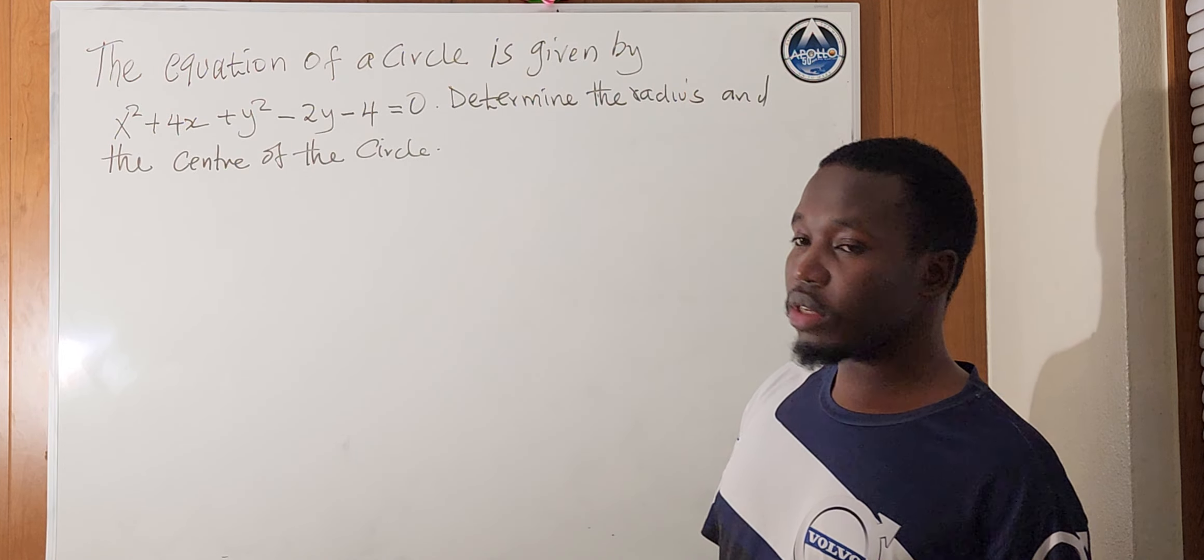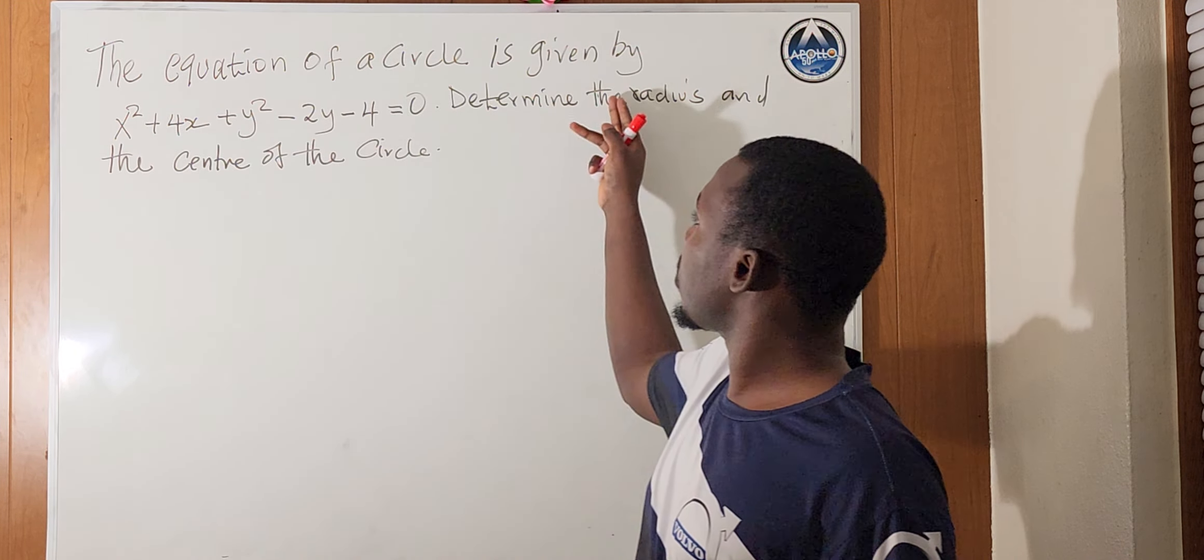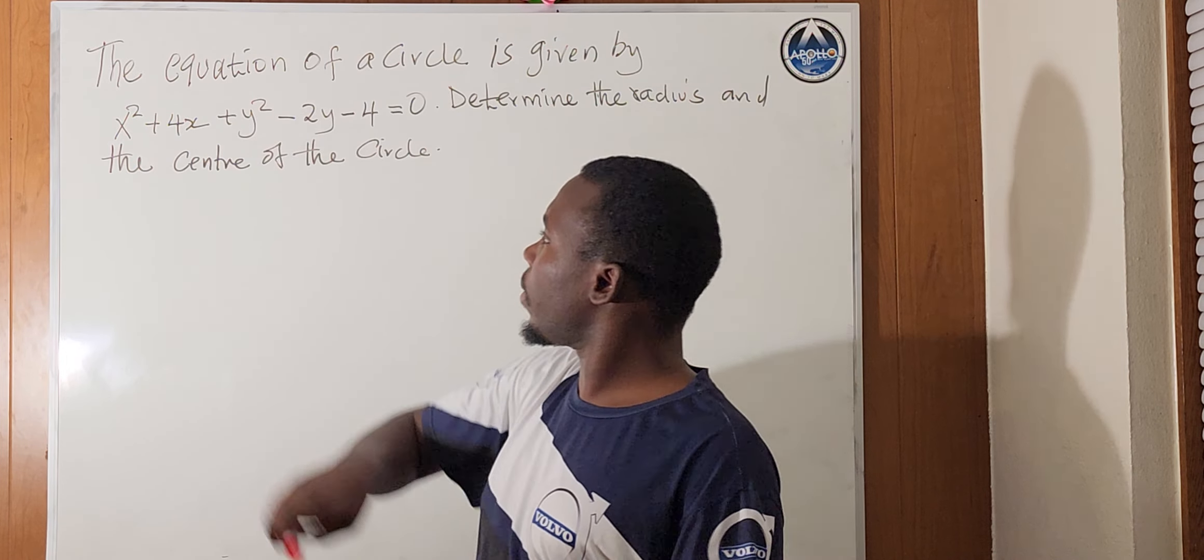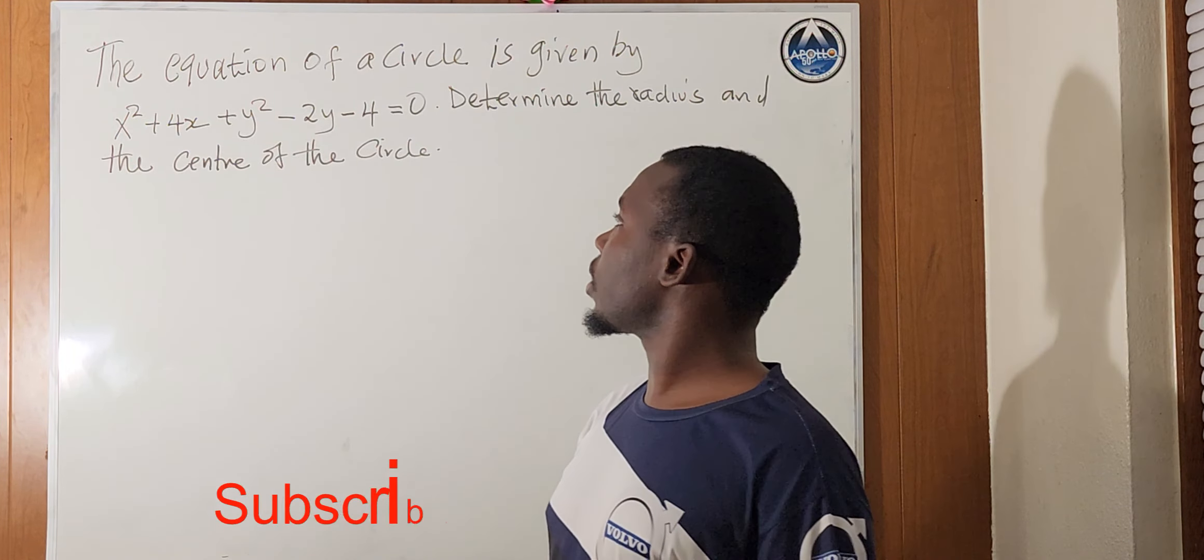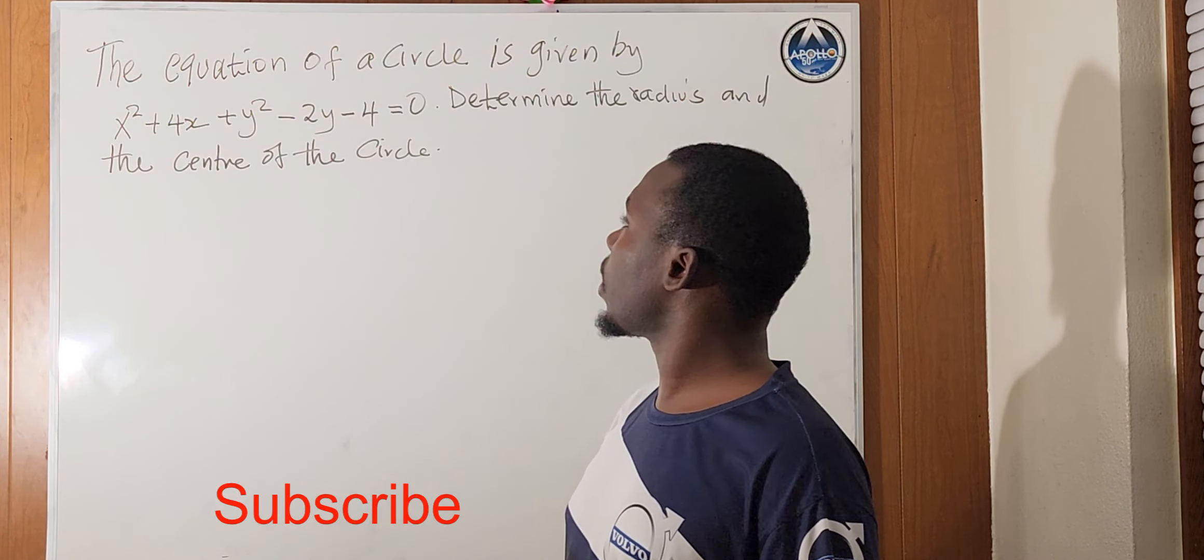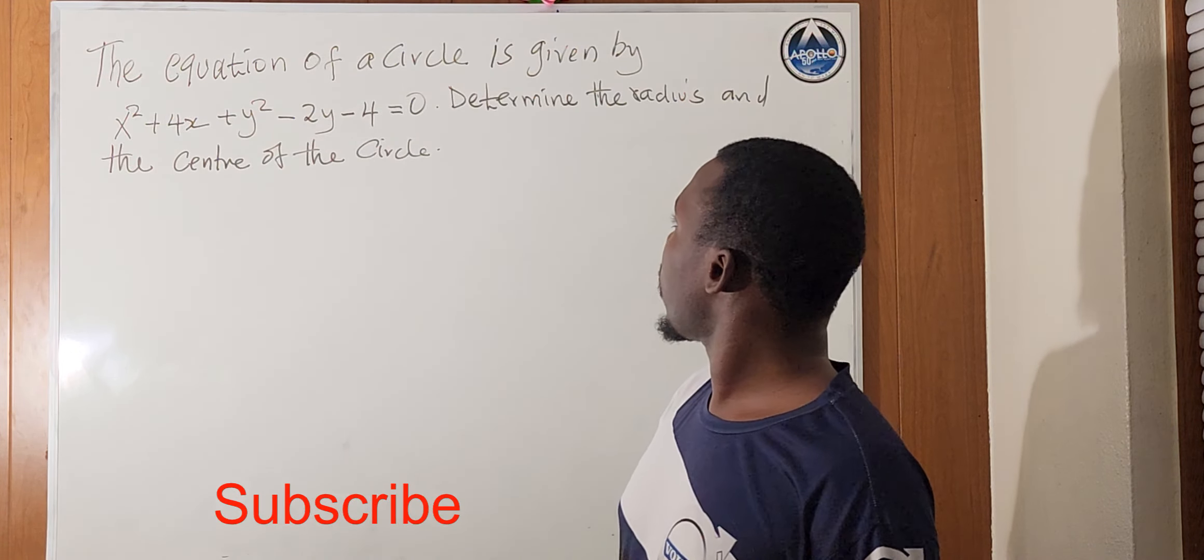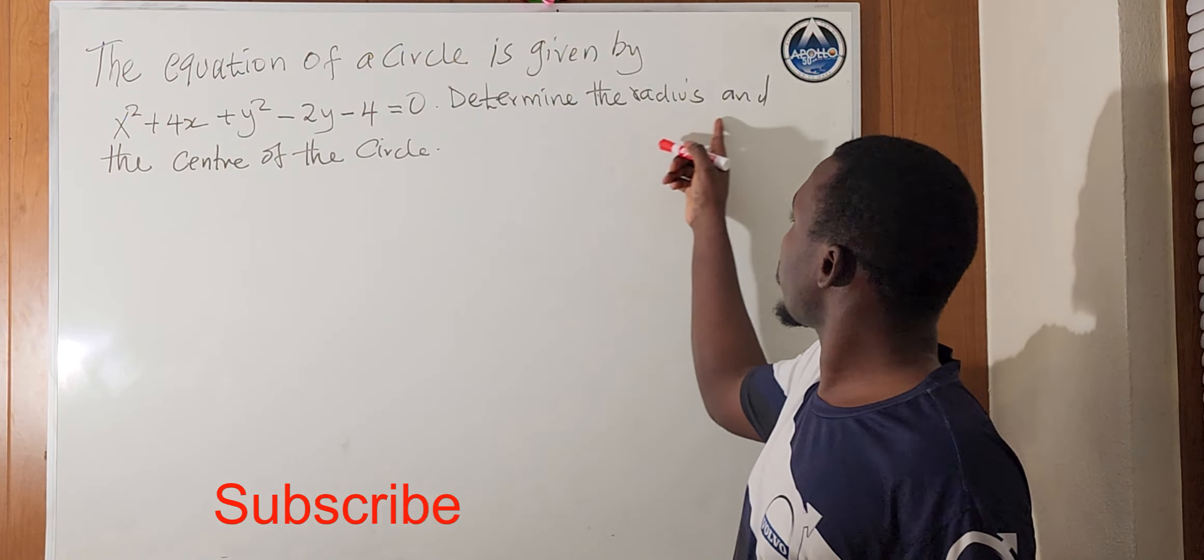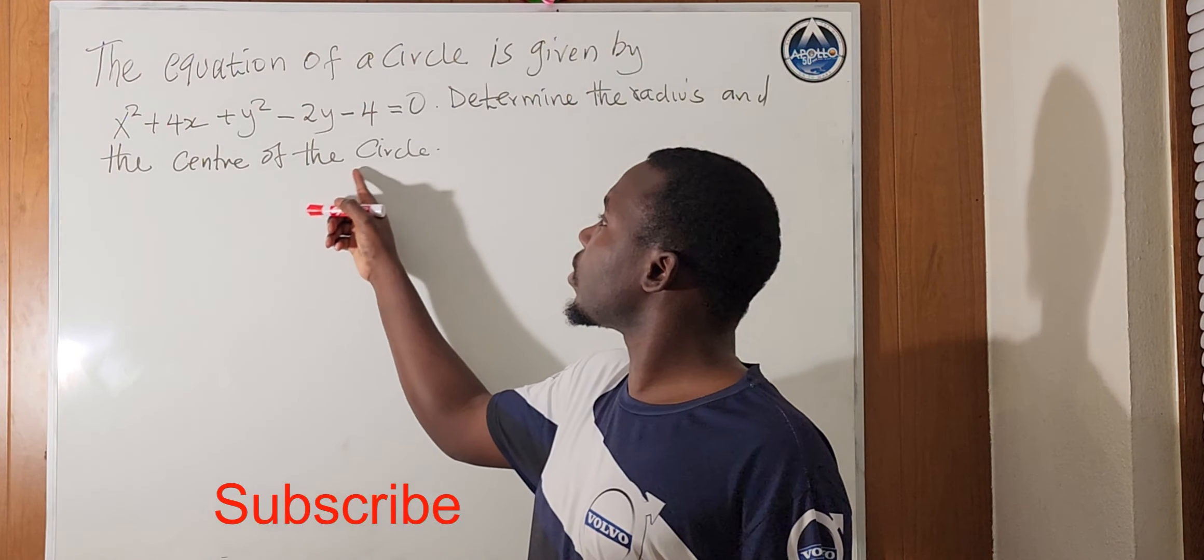The question says, the equation of a circle is given by this equation here: x squared plus 4x plus y squared minus 2y minus 4 equals 0. And it's asking us to determine the radius and the center of the circle.